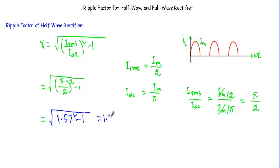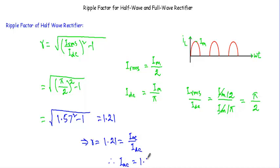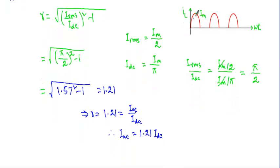Here I get root over (1.57 squared minus 1), which equals 1.21. So gamma is equal to 1.21. Since gamma equals IAC/IDC, we get IAC equal to 1.21 IDC. This means the AC component in the rectifier output is 1.21 times the DC component. As the AC component is higher than the DC component, the half wave rectifier is a poor device for rectification.